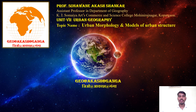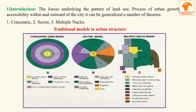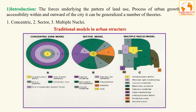In the study of urban geography, various geographers study the spatial arrangement of urban cities — their structure, shape, and various functions in urban areas. The forces underlying the pattern of land use, the process of urban growth, and accessibility within and outward of the city can be generalized into a number of theories. Each city possesses a unique combination of land uses, but to some degree a common pattern is visible.